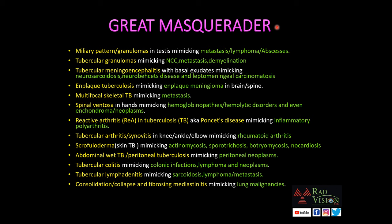Tuberculosis affecting different organ systems can mimic many diagnoses — the so-called great masquerader. Miliary pattern or granulomas in the testis can mimic metastasis, lymphoma, or abscesses. Tubercular granulomas in the brain can mimic neurocysticercosis, metastasis, or demyelination. Tubercular meningoencephalitis with basal exudates can mimic neurosarcoidosis, neuro-Behçet disease, and leptomeningeal carcinomatosis. En plaque tuberculosis can mimic en plaque meningioma in the brain and spine. Multifocal skeletal TB with multiple spinal lesions can mimic lymphoma or metastasis. Spina ventosa — TB of the short bones of the hands — can mimic hemoglobinopathies, hemolytic disorders, and enchondromas or neoplasms.